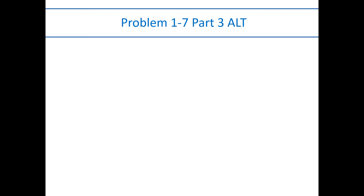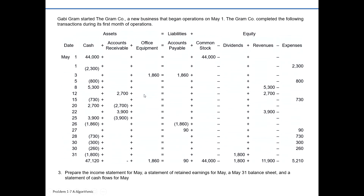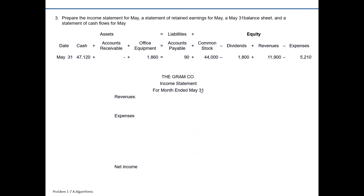With this video, I'm covering the second in our series of the alternate version of problem 1-7, focused on part three. I'm going to knock out the first three of the financial statements and reserve a separate video for the statement of cash flow. Where we left off in our first video was we had already recorded the transactions for Graham Company for the month of May and showed how those affected our accounting equation. The next step is preparing our financial statements.